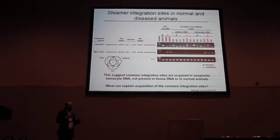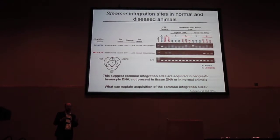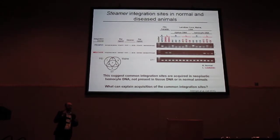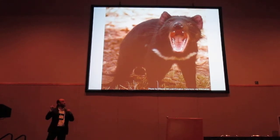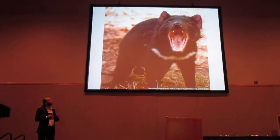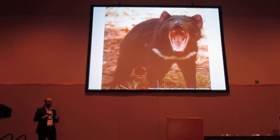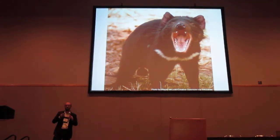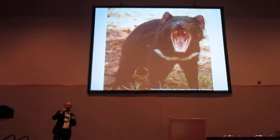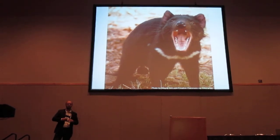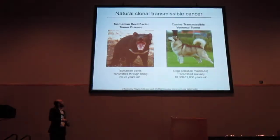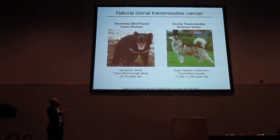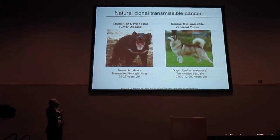That led us to consider other hypotheses to explain what was going on, and now we have to get into Tasmanian devils a little bit — in particular, the Tasmanian Devil Facial Tumor Disease. That is a solid tumor that spreads from animal to animal by biting, and it's actually a clonal transmissible cancer spreading through the population, one of the two transmissible cancers previously known.